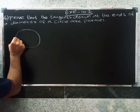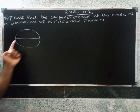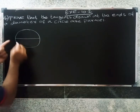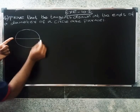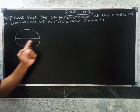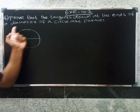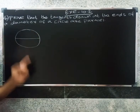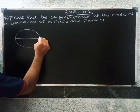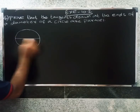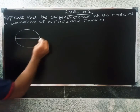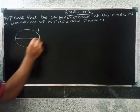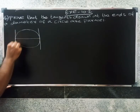The center part of a circular line segment is the diameter. The tangents drawn at the ends of a diameter — we need to show these tangents, drawn at the ends of the diameter, are parallel.